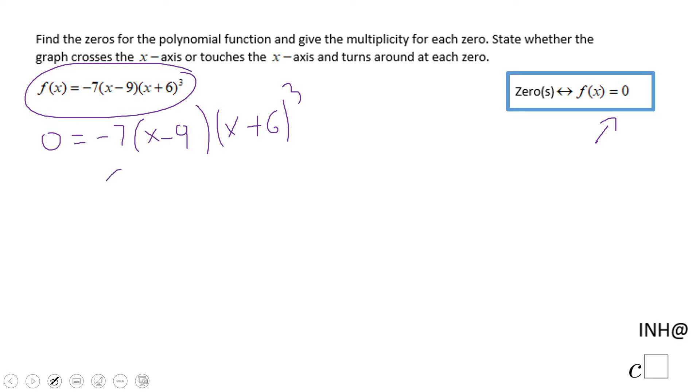What do I mean by this? X minus nine equals zero, right? We can use the zero product property because this polynomial function is in the factor form. So that will give us X equals nine, or an X intercept of nine and zero.